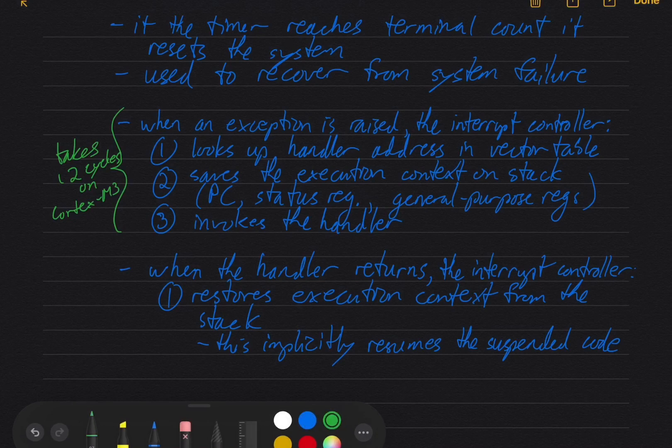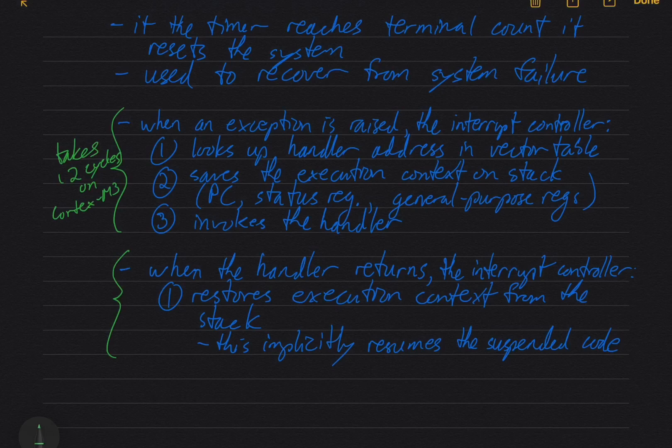I say code because interrupts can actually interrupt each other depending on their priority number. So you might have the application that's been suspended so that one ISR can run. And then a higher priority interrupt comes in. And so the currently running ISR gets suspended. So you can have these layers or this nesting of interrupts. Anyway, so all this takes 10 cycles to return. Which is pretty fast.